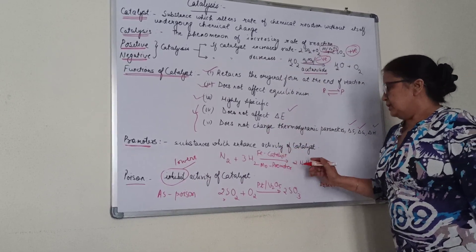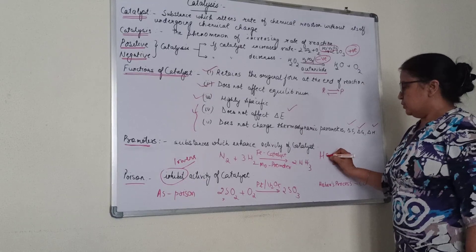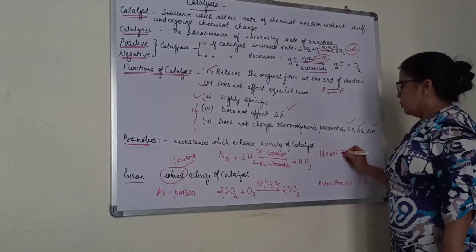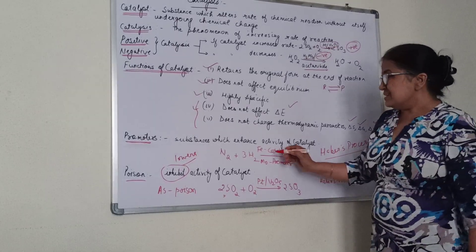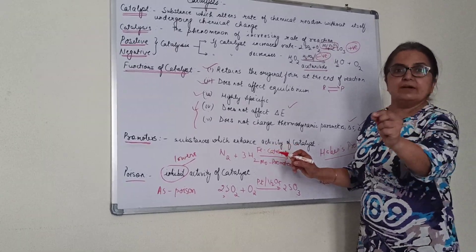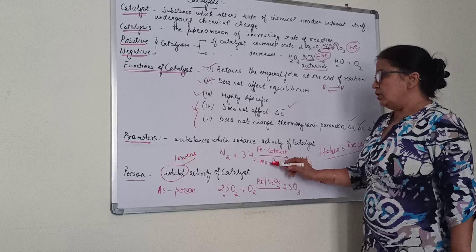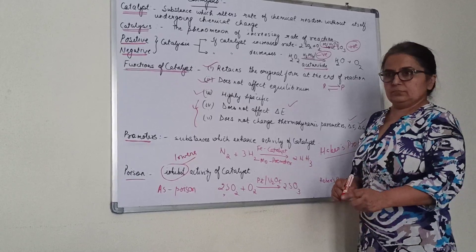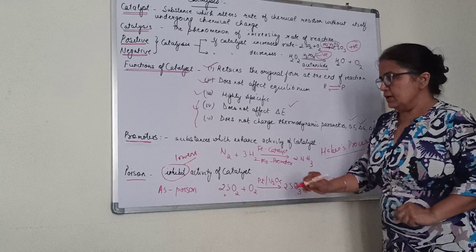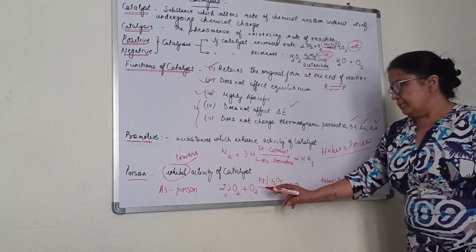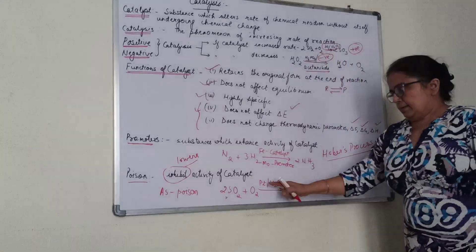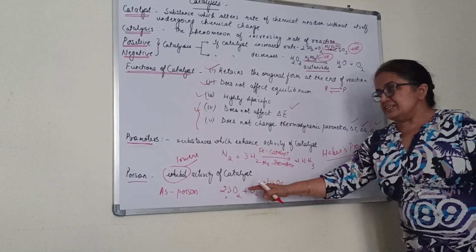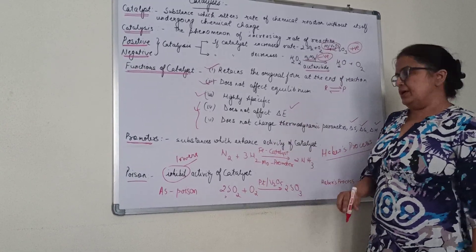For example, in Haber's process for the preparation of ammonia, finely divided iron is the catalyst, but molybdenum is a promoter—it increases the efficiency of iron. Similarly, in the contact process we discussed, vanadium pentoxide is used. We will study this in P-block elements.